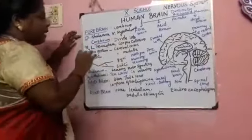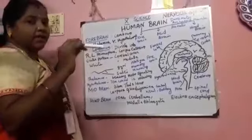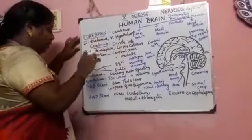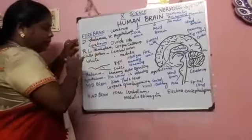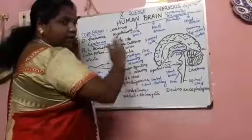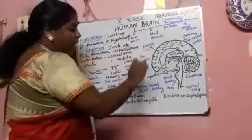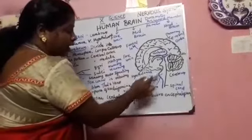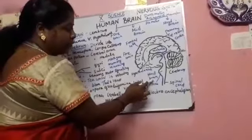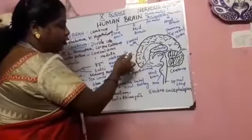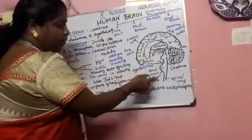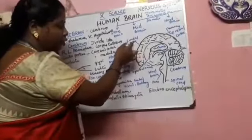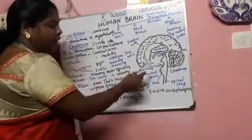The brain has been classified into three: forebrain, midbrain, and hindbrain. So here is the forebrain — the frontal lobe. Midbrain is present between the forebrain and the hindbrain. Hindbrain is at the terminal end.